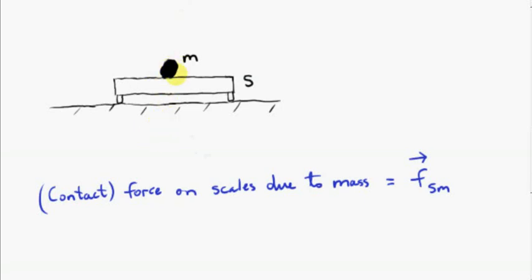Here we have an object of mass M resting on the scales, which I'm calling S. Since the object is obviously in contact with the scales, the object of mass M exerts a force on the scales. That force is perpendicular to the surface of contact, so it's normal to the scales at this point.